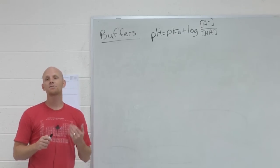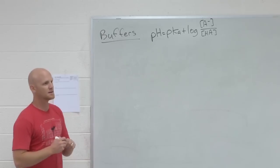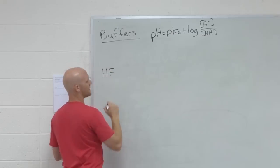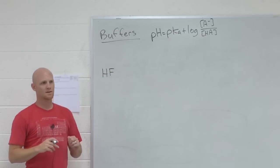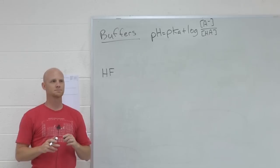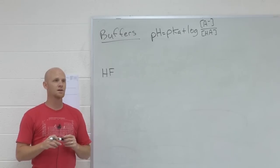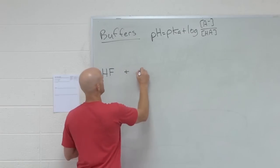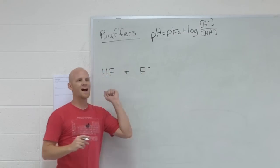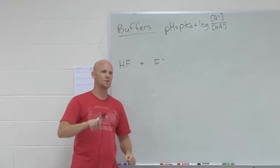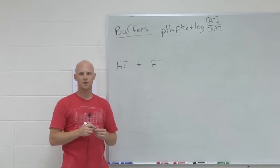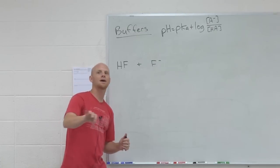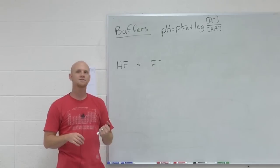That being said, there are three ways to make a buffer. Let's say we made a buffer involving HF. Can HF be one of the components in a buffer? Yeah, because it's a weak acid. What do I need to mix it with then? F minus. Well, F minus is an ion. If I was going to add a compound into a beaker of water, I can't just add pure F minus. It doesn't exist. I would have to add an ionic salt that contains F minus.